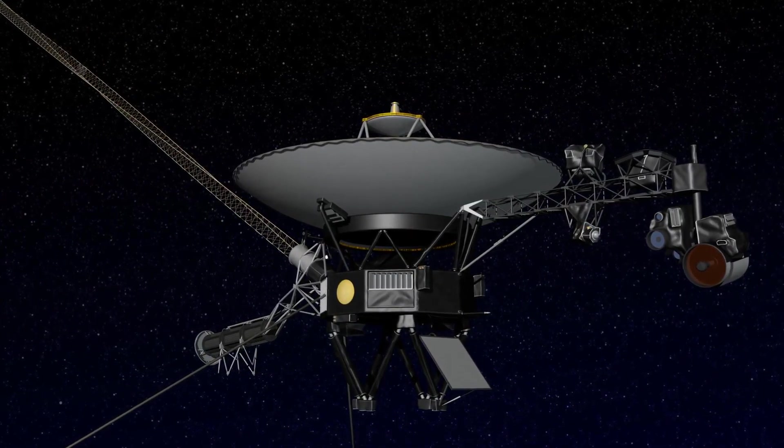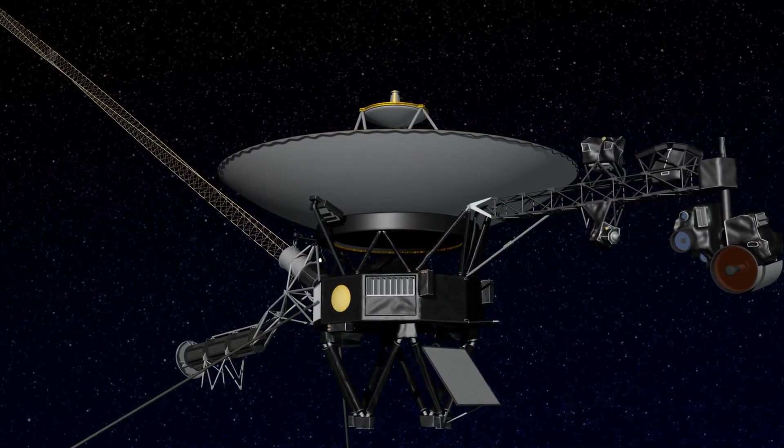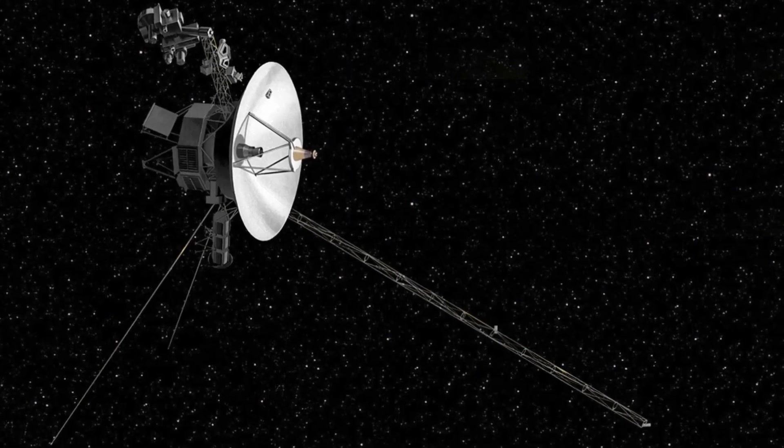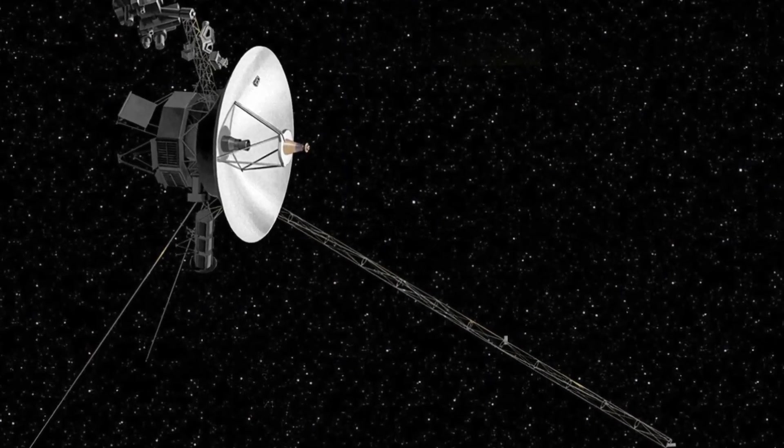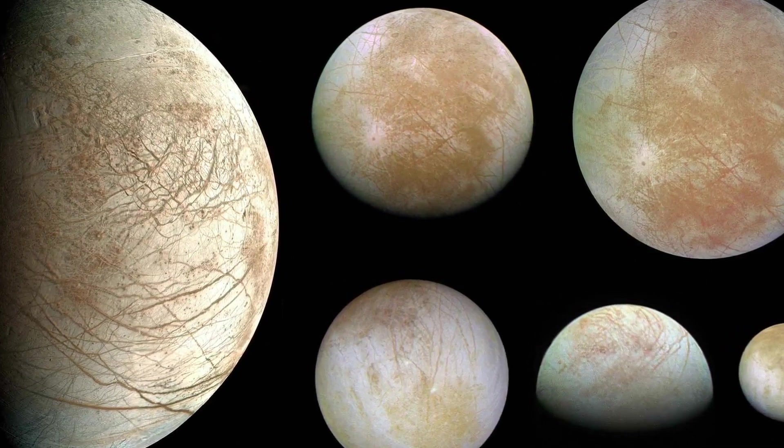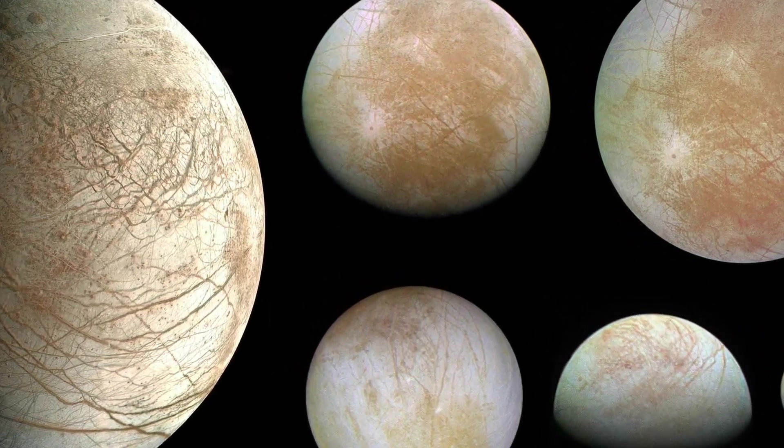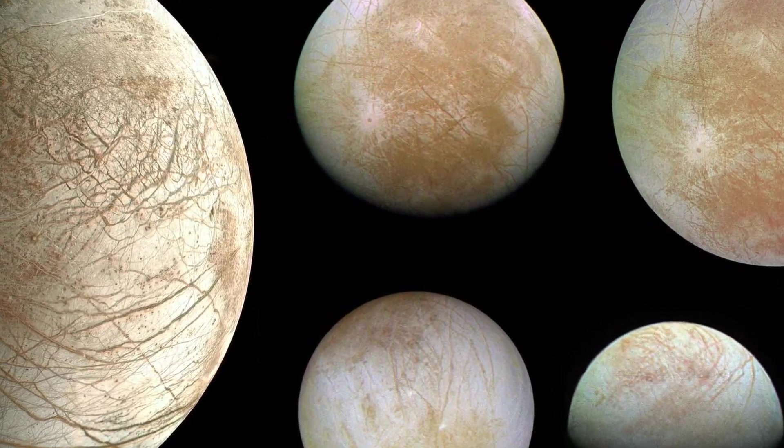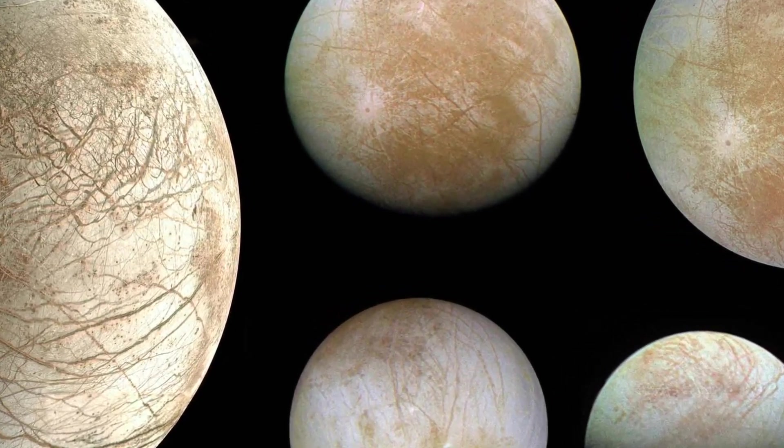Then, in March 1979, Voyager 1 took high-resolution photos of its surface, followed by Voyager 2 in July 1979. These expeditions revealed that the way the surface cracks had been separated suggested something liquid had flown through, while the lack of craters could be explained by the presence of water erasing them over time.